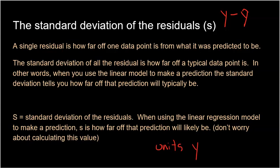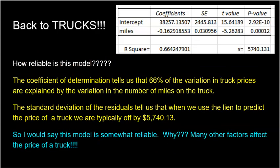Let's apply everything we've learned to our truck problem. Here is the computer output table, which is a nice way to give you everything you need. Remember from the previous video: you don't need the columns for SE, T, or P. What you do need are the coefficients — in alphabetical order, your y-intercept first, then slope B. The computer output also gives you R-squared and S, so you don't have to calculate those numbers.